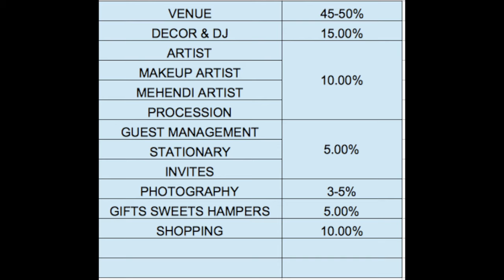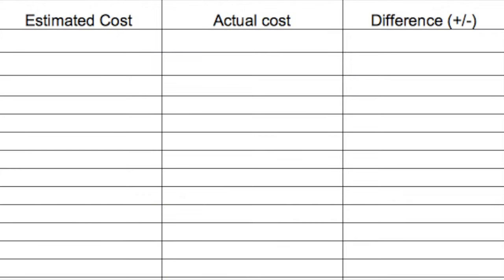Now do another job: in your diary or Excel sheet, make one column for estimated cost and one column for actual cost. When you book a vendor, enter the actual cost against the estimated percentage amount. For example, if the total budget is 40 lakhs, the maximum for the venue would be 20 lakhs. When you do the venue booking, the actual cost gets compared to that, so when you finalize everything, you won't go over budget — because that picture is already noted in your diary.